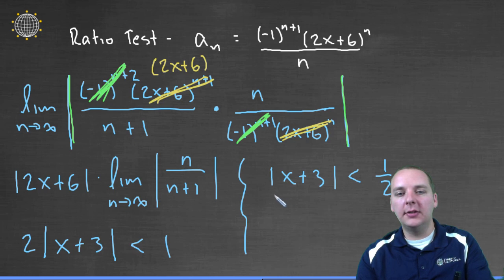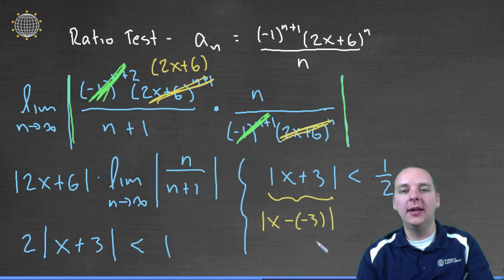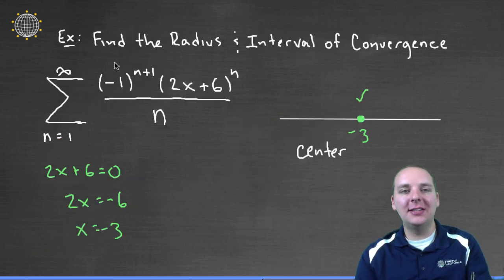Now this part right here, what does this mean? This is actually referring to the distance, if you wrote this as absolute value x minus negative 3, that's the same as x plus 3. This is the distance between x and negative 3. That actually doesn't surprise me, because our center of this power series was at negative 3.